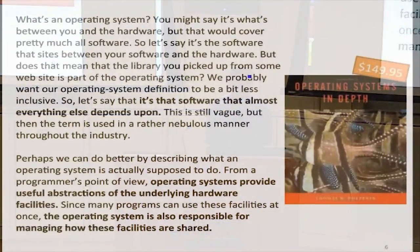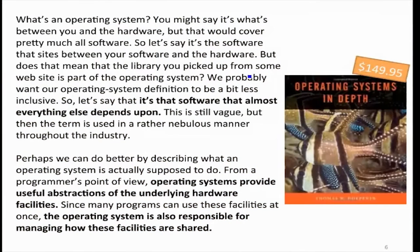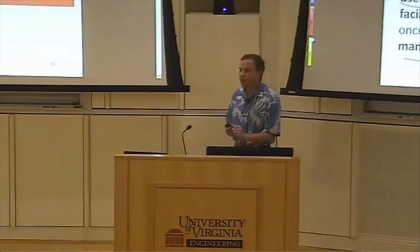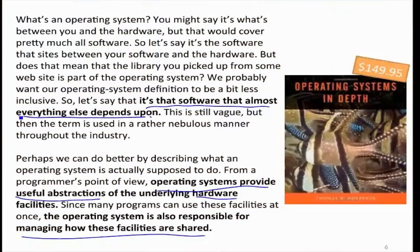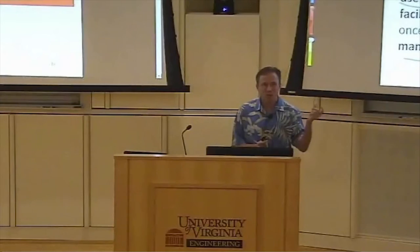Here's another definition — a really long rambling one, but it actually gets to some things I quite like. It's about providing abstractions of underlying hardware, and it's about managing how things are shared. That starts to get at the two main concepts we're really going to focus on in understanding what's important about operating systems. There's also a quote that it's the software that almost everything else depends upon, which is sort of true but also sort of confusing — almost all programs depend on other programs, and at some level you get down to a program that doesn't depend on any others.